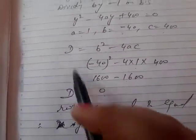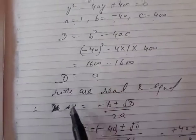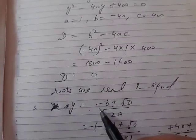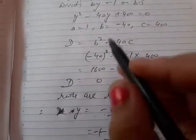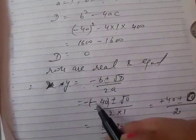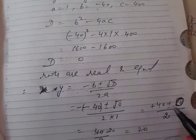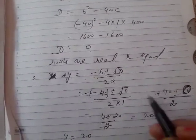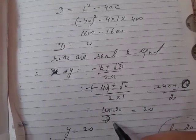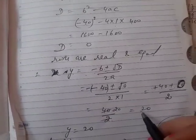Now we will find y. So y equals minus b plus minus root D over 2a. This is the formula. b equals minus 40, so minus times minus 40. D equals 0, so square root is 0. So minus 40 plus minus 0 over 2 times 1, that is 40 over 2, equals 20.